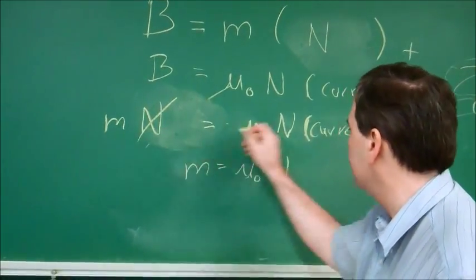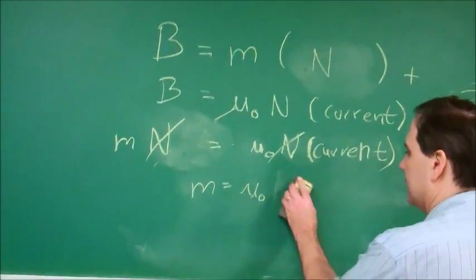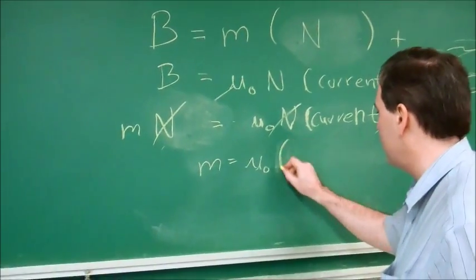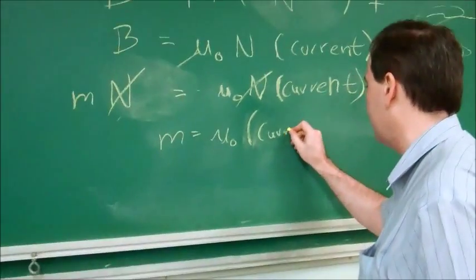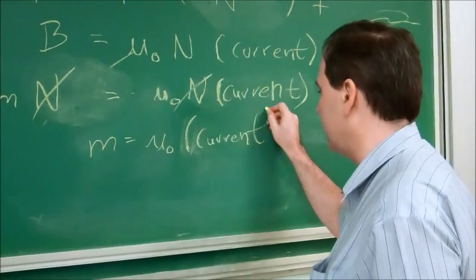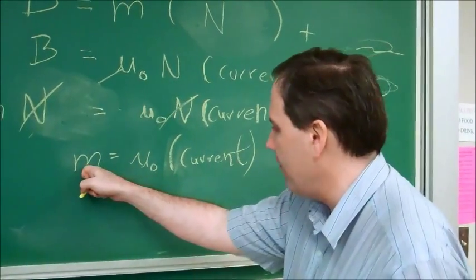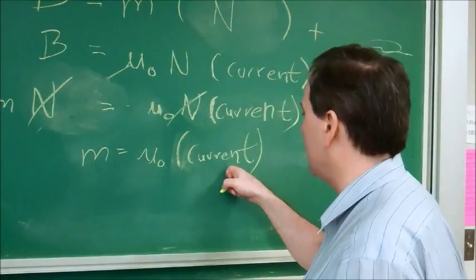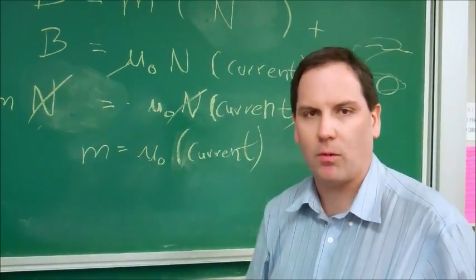The N's cancel out, and we get that m is equal to mu zero times the current. Again, this is the second part. The current stays a constant in the second part. We know m, that's our experimental data. We know our current, solve for mu zero.